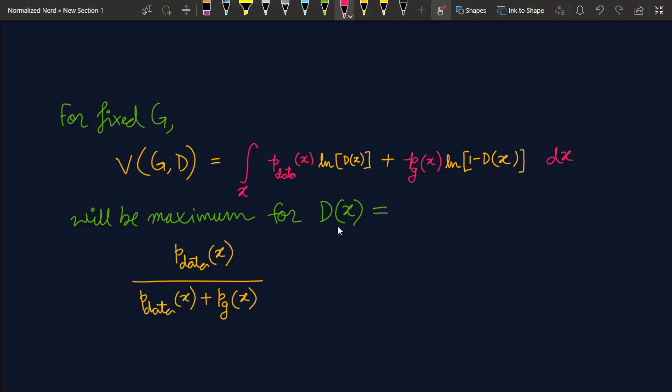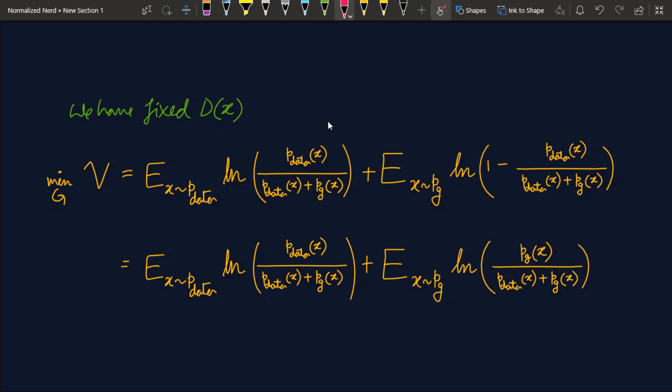Now let's fix the dx as this and replace that into our value function. So after fixing d and substituting that in the value function we get this and after a little modification we are getting this long expression. And here min G just represents that G will try to minimize this thing. Now understand what we wanna do here. Well, we wanna prove that probability distribution of generator will be exactly same as the probability distribution of the data.